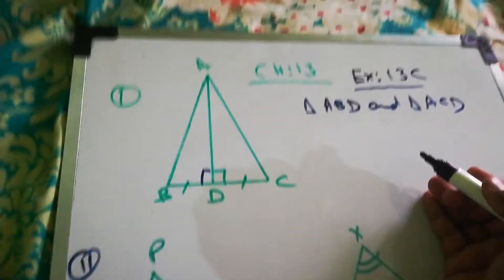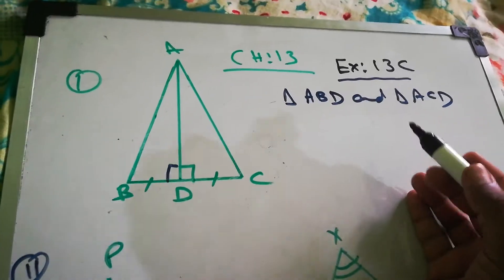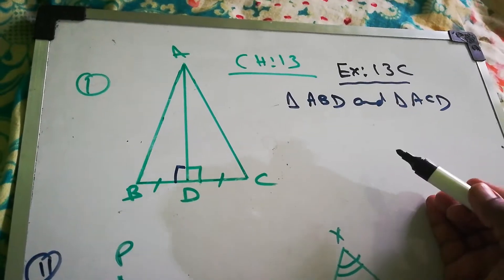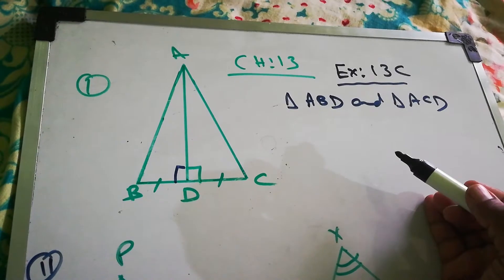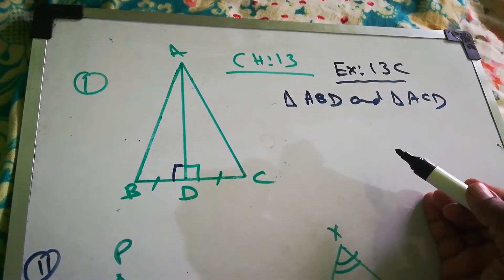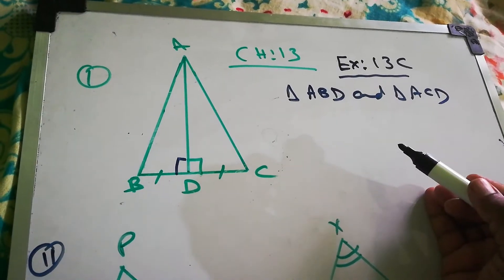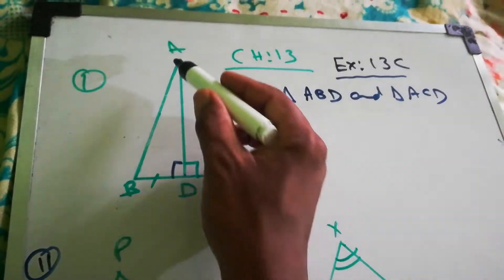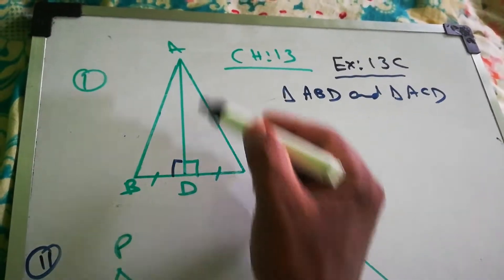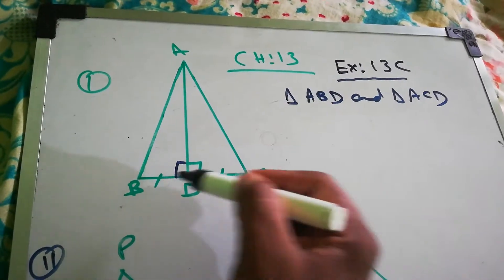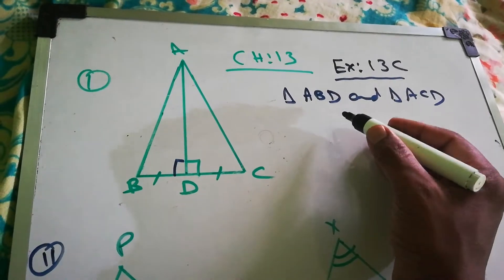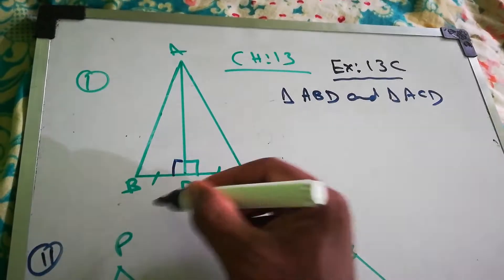Chapter 13, exercise 13C, first question: which of the following pairs of triangles are congruent by side-angle-side congruence? Take triangle ABD and triangle ACD — these two triangles.